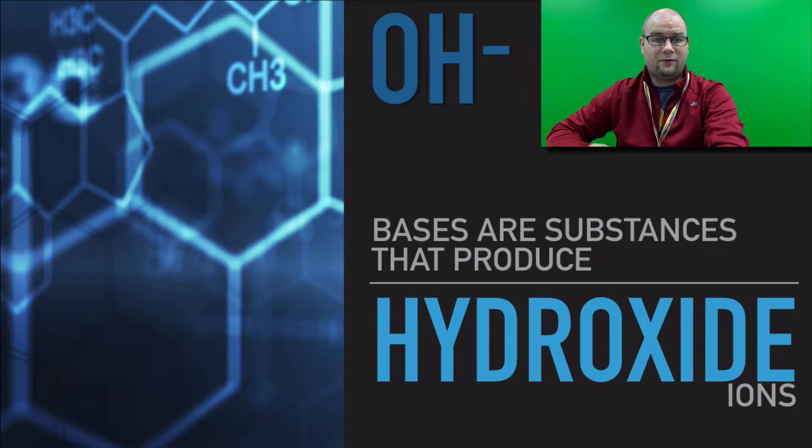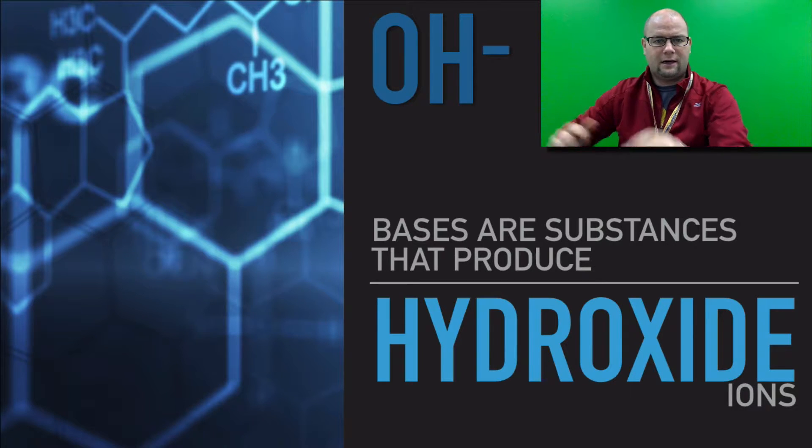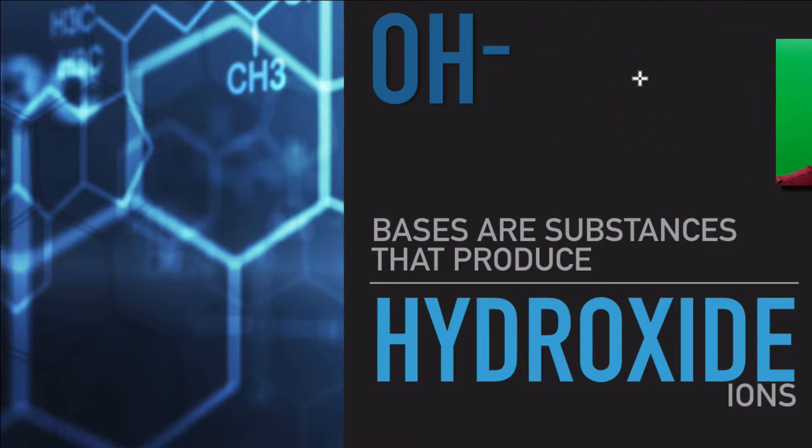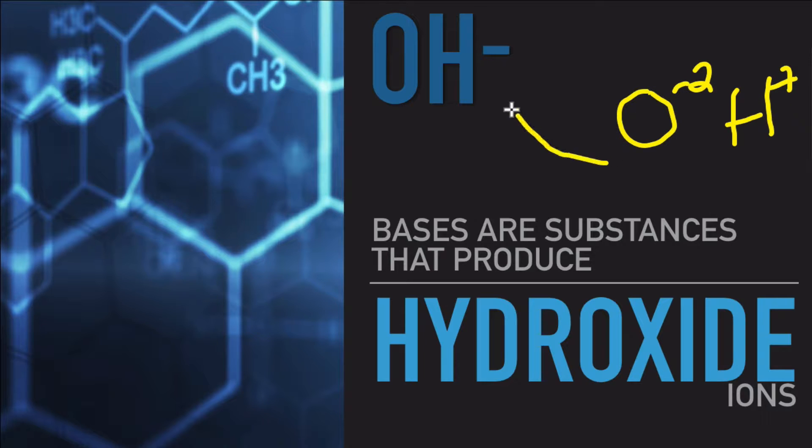We also have hydroxide ions, and I'll just draw this out for you real quick here. So we have an oxygen atom, and that will tend to gain two electrons. So it becomes minus two, but a hydrogen is plus one. So what happens is one of these negatives gets canceled by that positive, and we end up with OH minus. So we have those two ions, hydrogen and hydroxide.